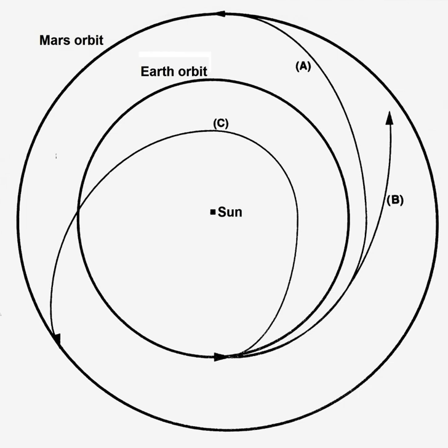A heliocentric orbit is an orbit around the barycenter of the solar system, which is usually located within or very near the surface of the Sun.